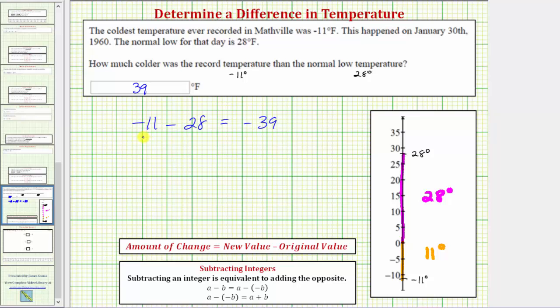But let's also look at the subtraction problem if we have the normal low temperature of 28 degrees minus the record low temperature of negative 11 degrees. 28 minus negative 11 is equal to 28 plus 11, which would give us positive 39.